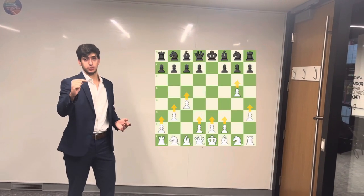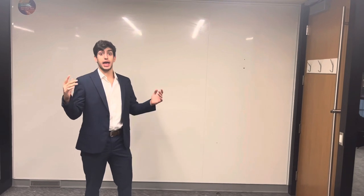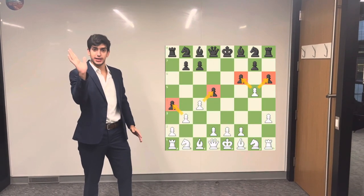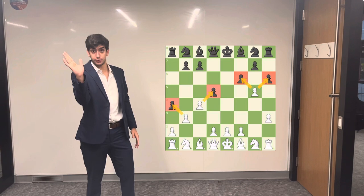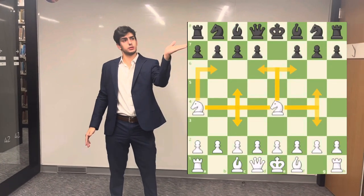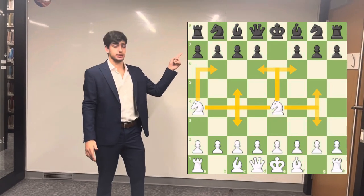The pawn advances forward only one tile at a time and it captures pieces diagonally, one tile diagonally forward. The knight moves in an L sort of way, just as displayed right here.